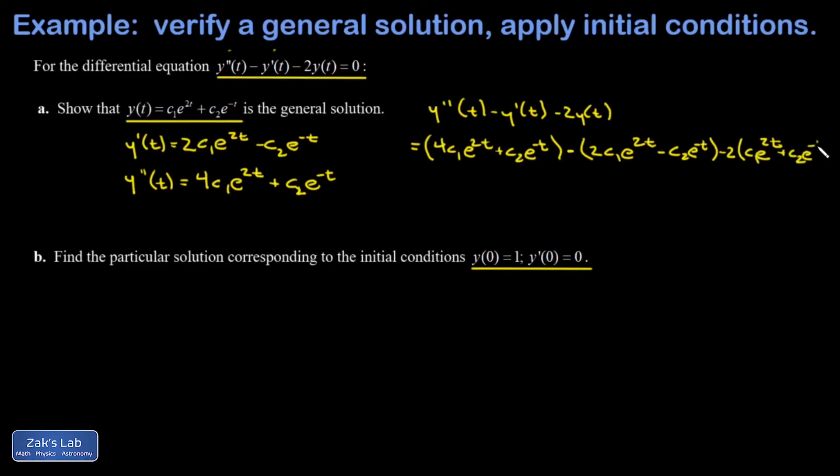Now I'm really not sure how much work to show here because the standard way to deal with it at this point is to do the bookkeeping one term at a time. Like I'm going to look at all the terms with an e^(2t) in them—there's one there, one there, and one there.